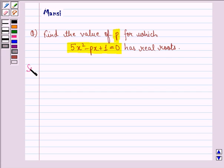So let us see the solution to this question. Now in this question, the equation given to us is 5x² - px + 1 = 0.